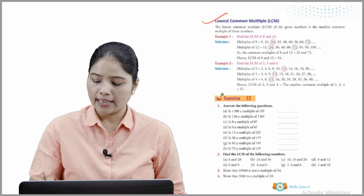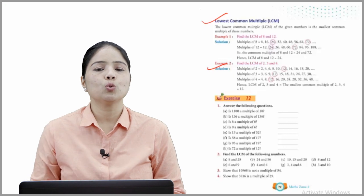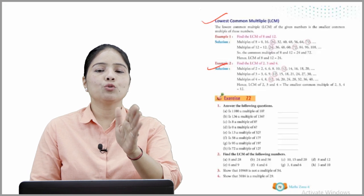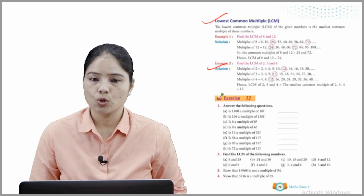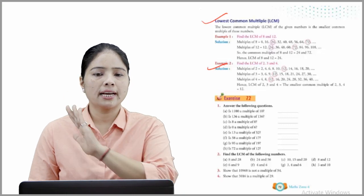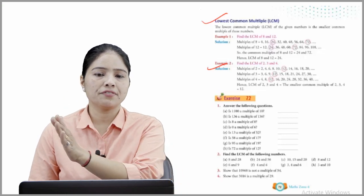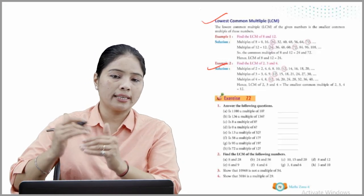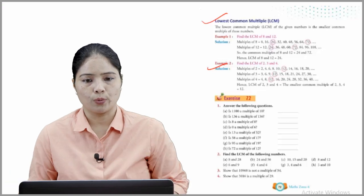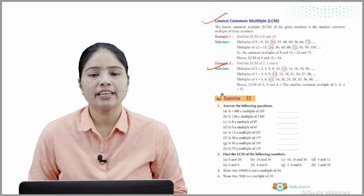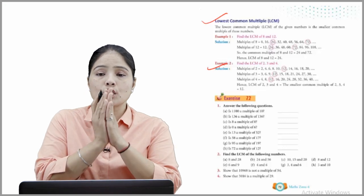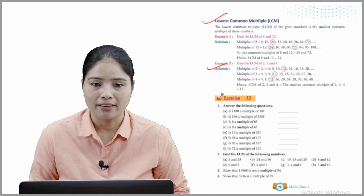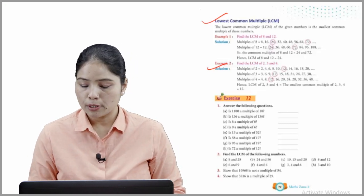Example 2: Find the LCM of 2, 3, and 4. Multiples of 2: 2, 4, 6, 8, 10, 12, 14, 16, 18, 20 and so on. Multiples of 3: 3, 6, 9, 12, 15, 18 and so on. Multiples of 4: 4, 8, 12, 16 and so on. The LCM of 2, 3, and 4 is equal to the smallest common multiple, which is 12.